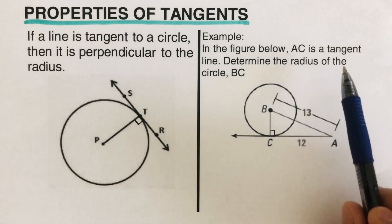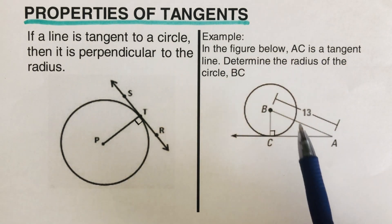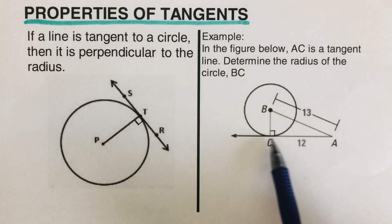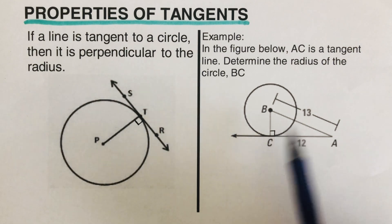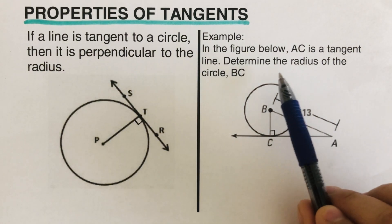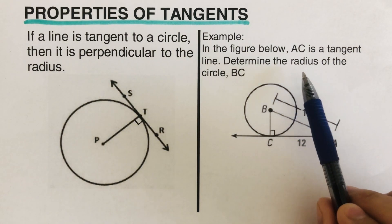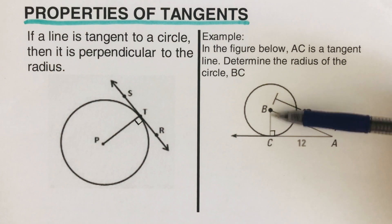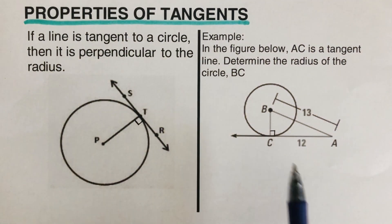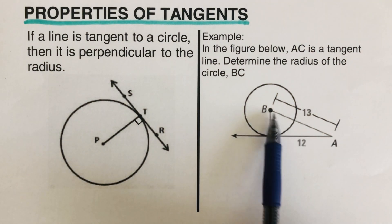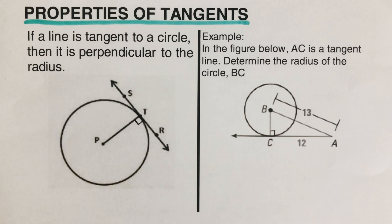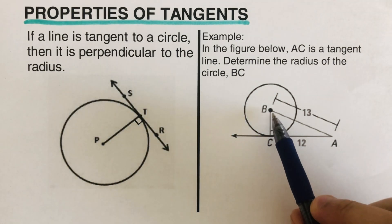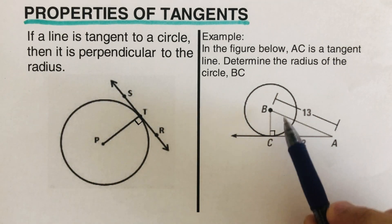Let's have the first example. In the figure below, AC is a tangent line touching the circle at point C. Our task is to determine the radius of the circle, BC. We are given another line segment AB which is 13. Since we can see that this is a right triangle, we can use the Pythagorean theorem.